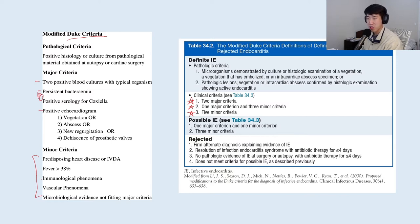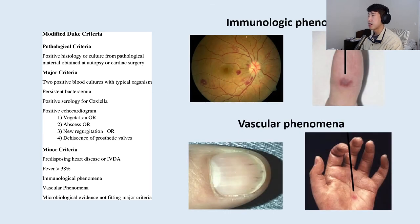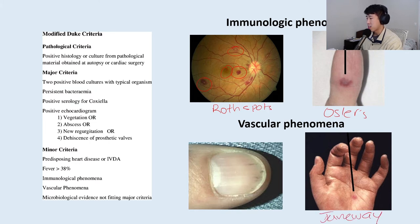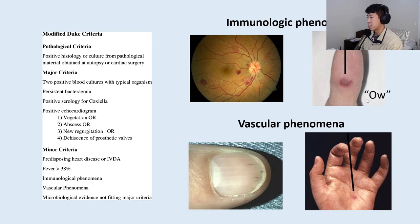Immunological phenomena include Roth spots in the eye — fluffy lesions — and Osler's nodes. Vascular phenomena include splinter hemorrhages and Janeway lesions. Osler's nodes are immunological phenomena caused by complement deposition, whereas vascular phenomena like splinter hemorrhages result from tiny emboli that travel distally and get lodged, causing a hemorrhage. The key way to differentiate Osler's nodes from Janeway lesions is that Osler's nodes are painful, whereas Janeway lesions are not.